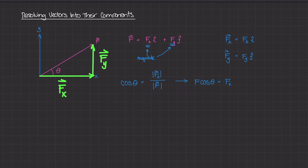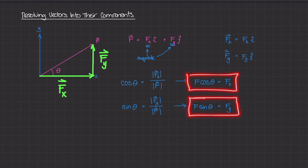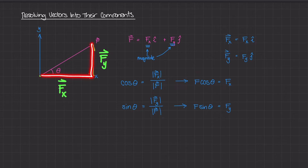Now let's do the same thing for Fy. Fy is the opposite side to theta, so we use sine of theta — that's opposite over hypotenuse — giving us Fy divided by the magnitude of F. Rewriting this, the magnitude of Fy equals F times sine theta. These two equations are what we use to figure out the magnitudes of the components Fx and Fy.